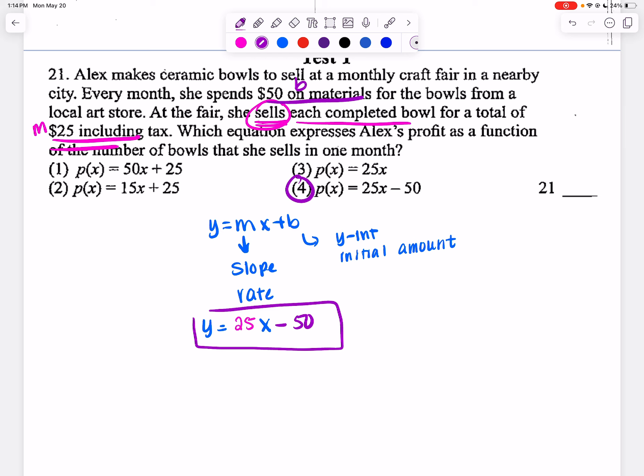Now you might be wondering, wait, why doesn't that have a Y equals? Well, P(x) is a fancy way of saying Y equals. They're using P because that's what profit stands for. So we're basically saying P(x) instead of Y. That's why it's choice 4.